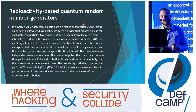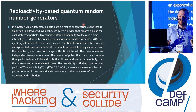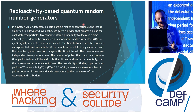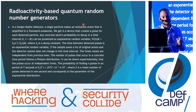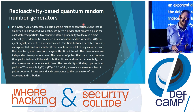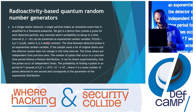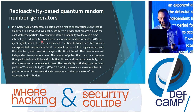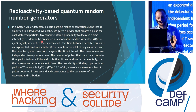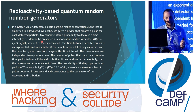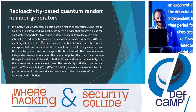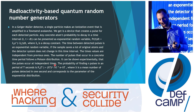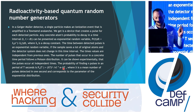In a Geiger-Müller detector, a single particle causes an ionization effect that is afterwards amplified in a thousand-fold avalanche, producing a pulse for each detected particle. The time of detection of this particle is an exponential random variable, and the probability of getting a pulse at any given moment can be shown by a formula. The number of pulses occurring in a concrete time period follows a Poisson distribution, and we can show experimentally that these pulses occur at independent times.